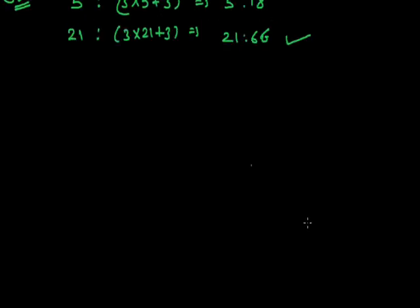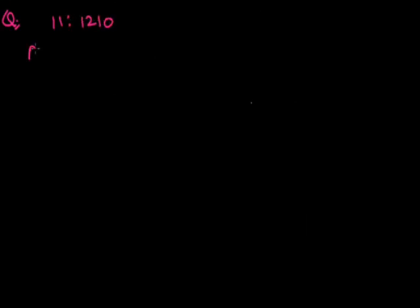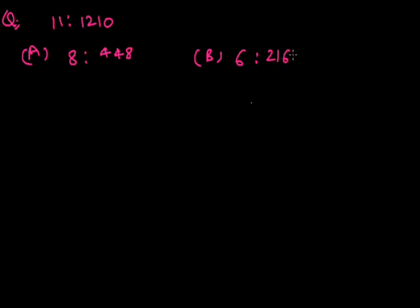Next question. Given: 11, 121, 10. Option A: 8, 4, 4, 8. Option B: 6, 2, 1, 6, 0. Option C: 7, 1, 0, 2, 9. Option D: 9, 7, 20.